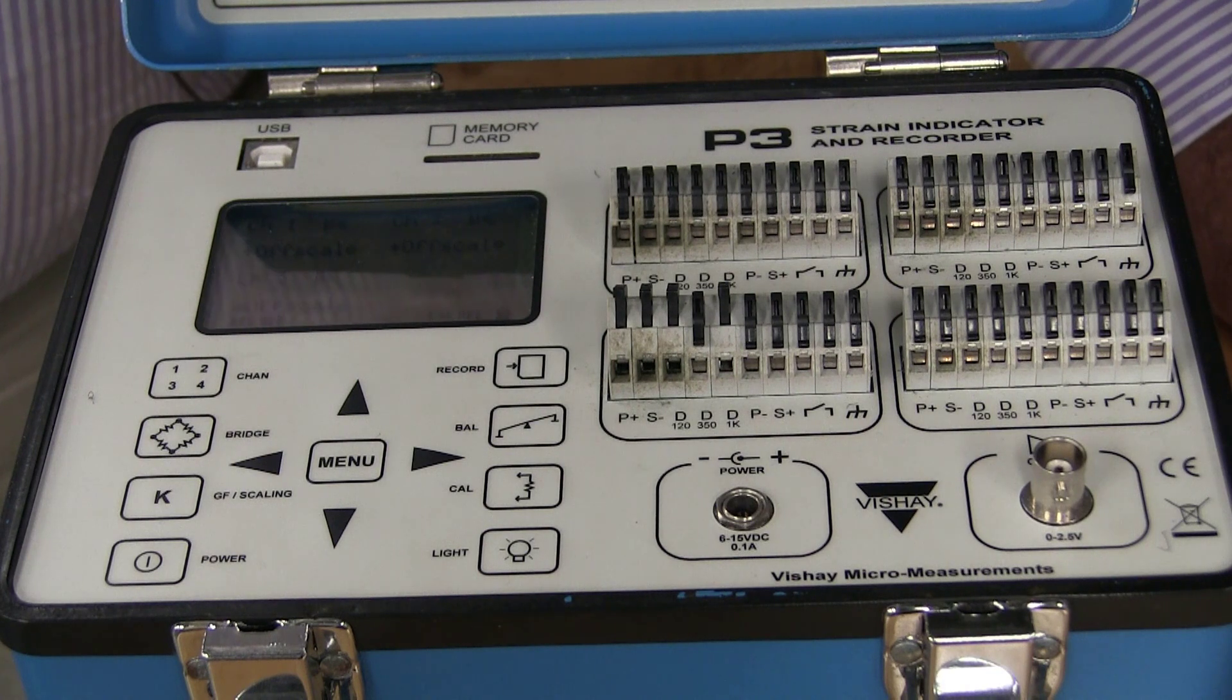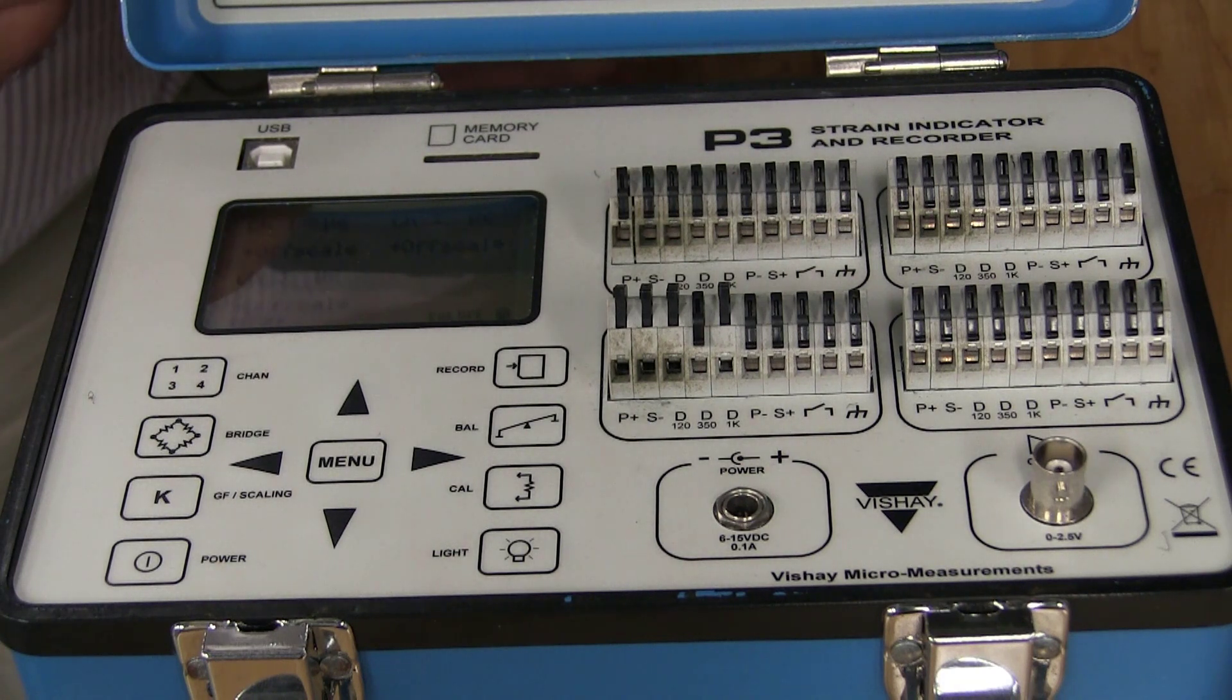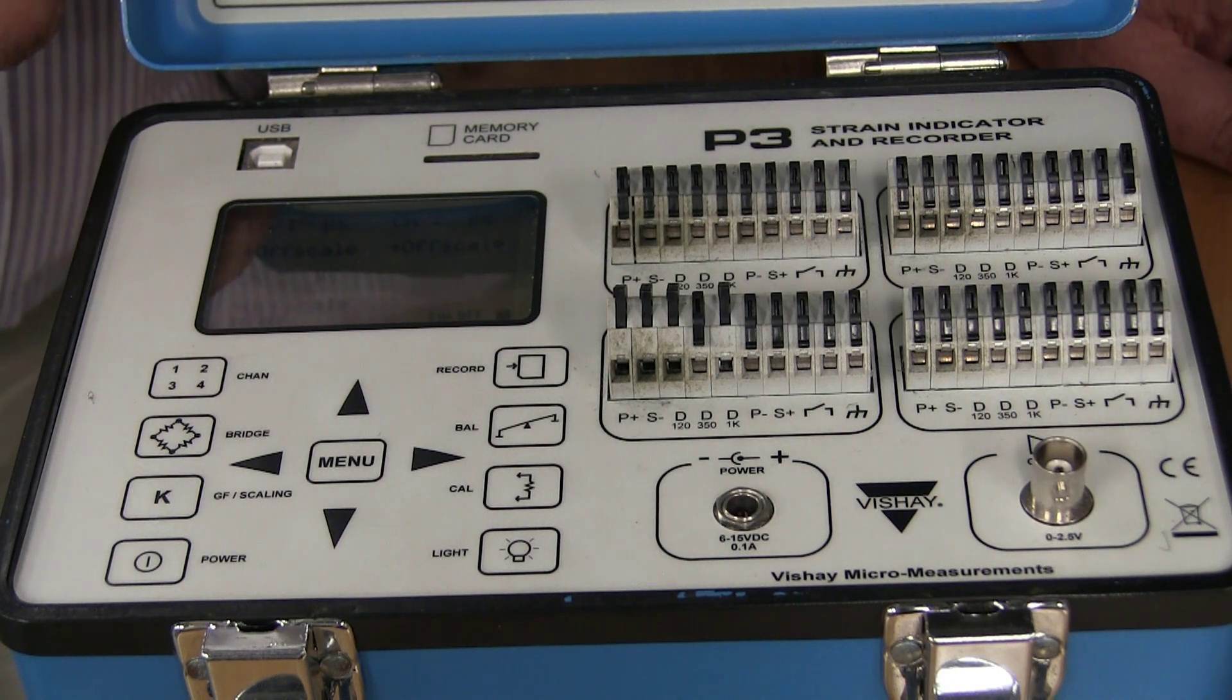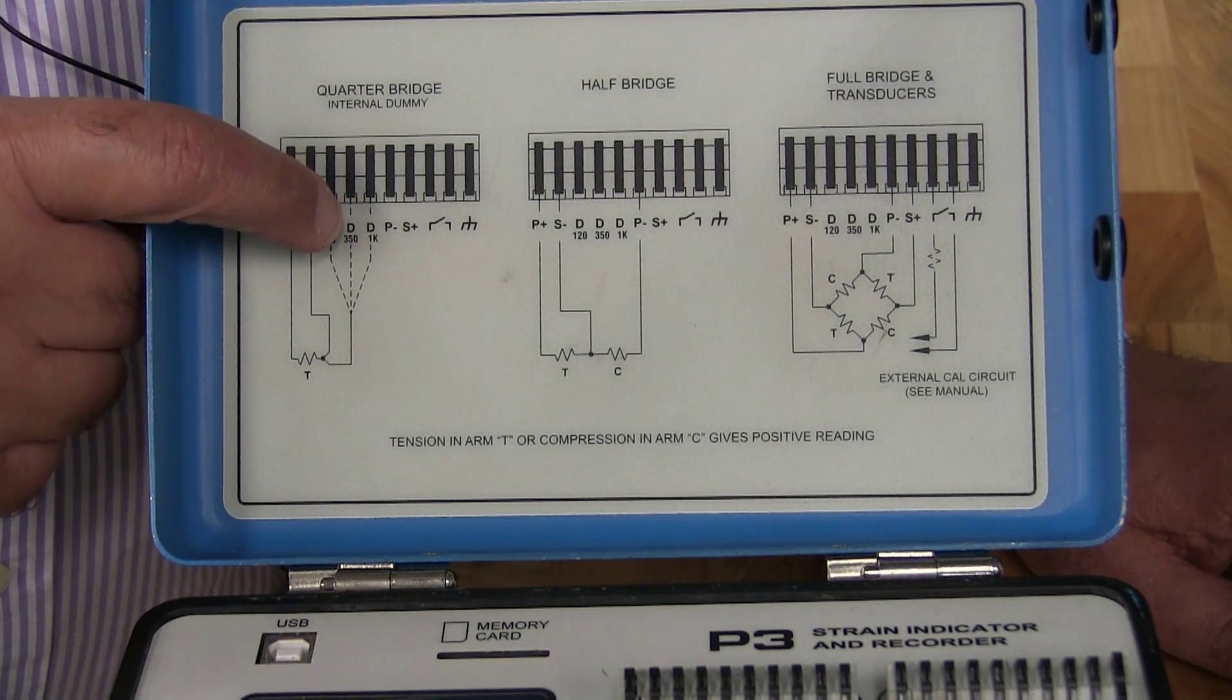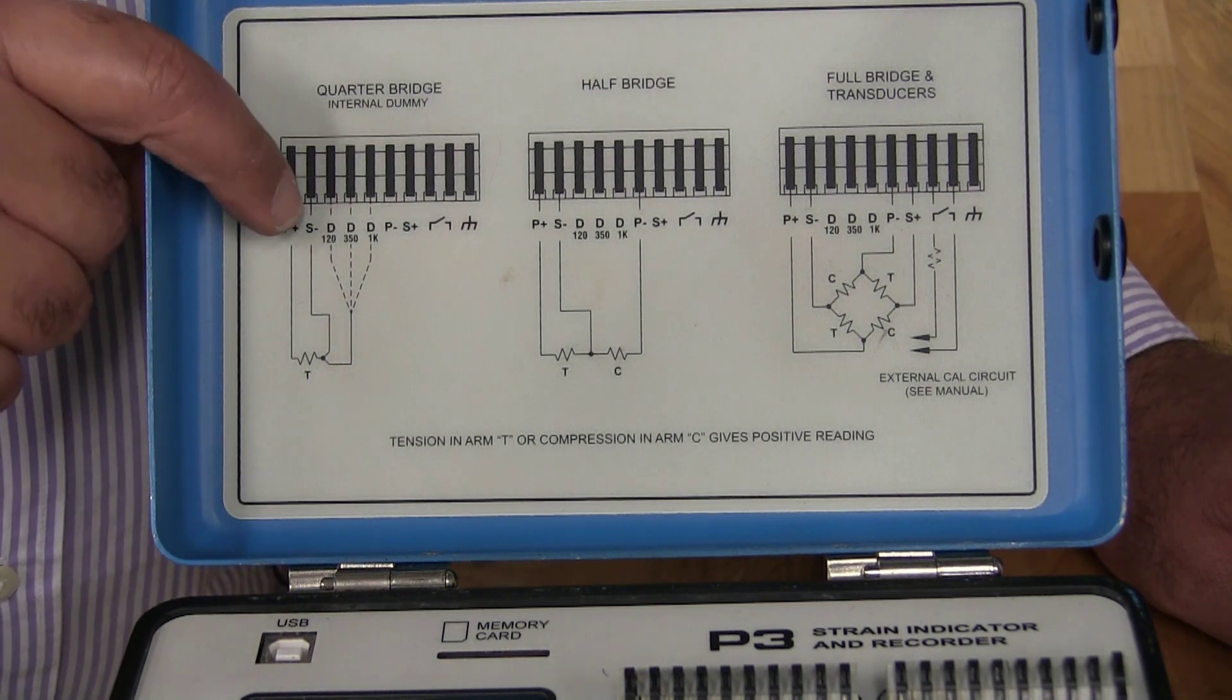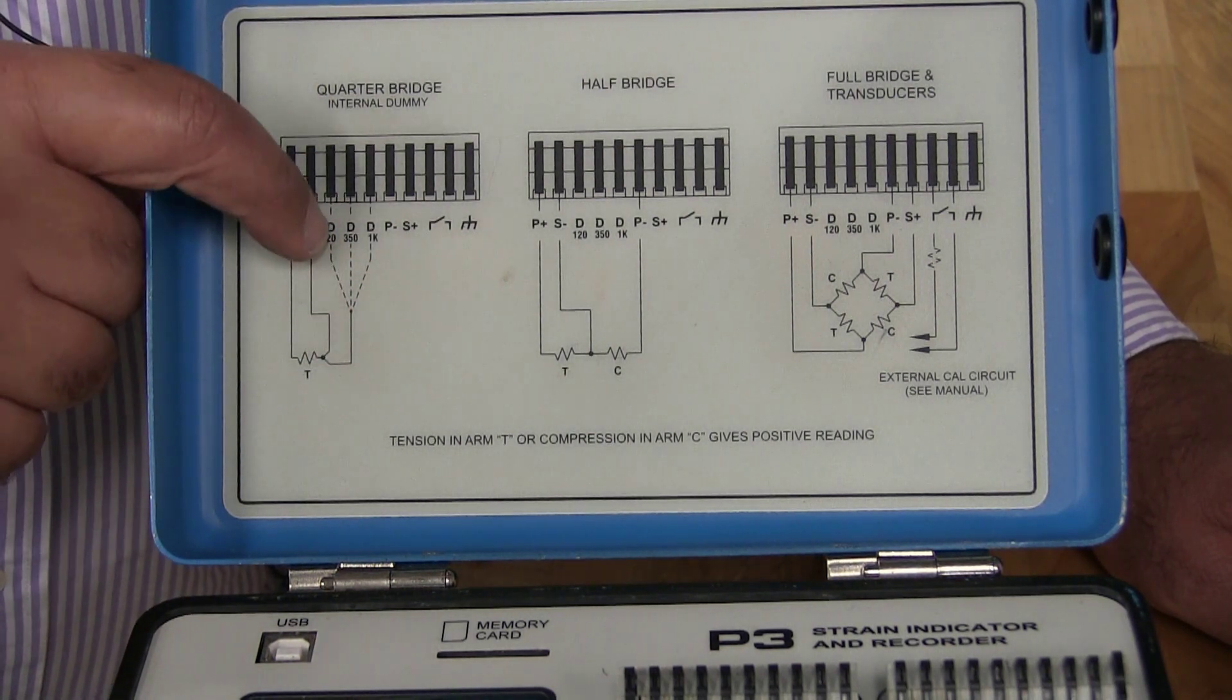Now all that's left is we have to follow the correct circuit diagram. This is the circuit diagram that we're going to be using. We're going to be using quarter bridge channels one, two, and three. Then remember when you do a quarter bridge circuit, you have your active gauge that goes between P plus and S minus. Then from S minus, you have to put a jumper over to the correct dummy resistor, which in this case, since our gauges have 120 ohms standard resistance, the correct dummy resistor is D120. We're going to be using this circuit diagram, and on this side, we're going to be going to D120.